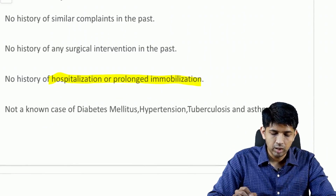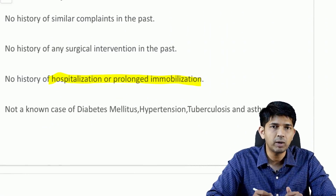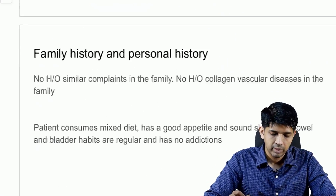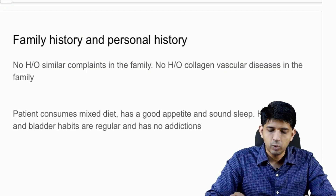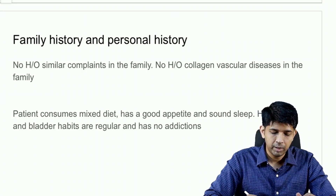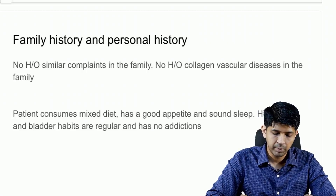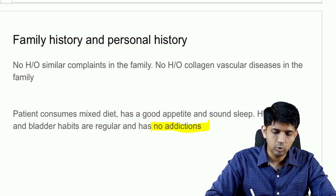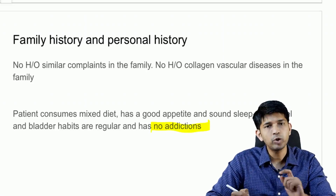He is not a known case of diabetes mellitus, hypertension, TB, or asthma — these are important if planning the patient for surgery. There is no history of similar complaints in the family, and no history of collagen vascular disease in the family. The patient consumes a mixed diet, has good appetite and sound sleep, with regular bowel and bladder habits and no addiction.